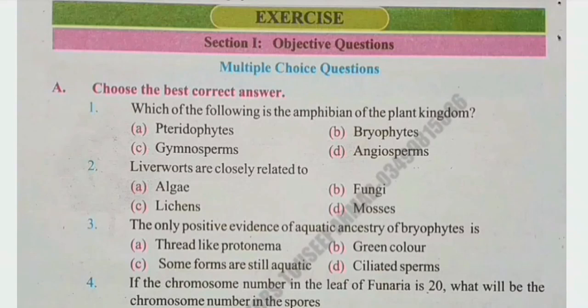MCQ number 1: Which of the following is the amphibian of the plant kingdom? Bryophytes are called amphibians of the plant kingdom. The right answer is B.